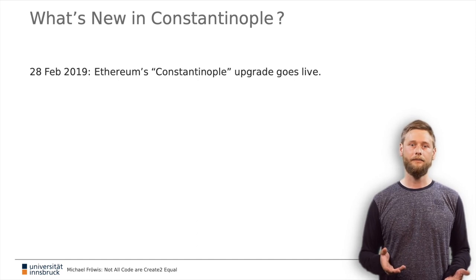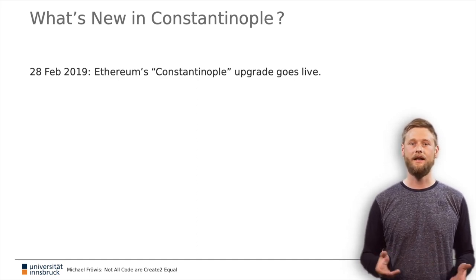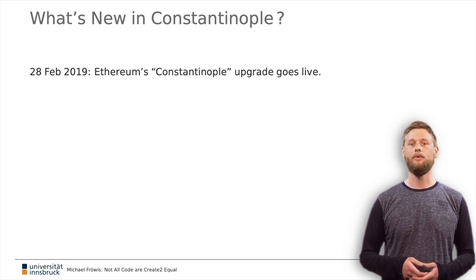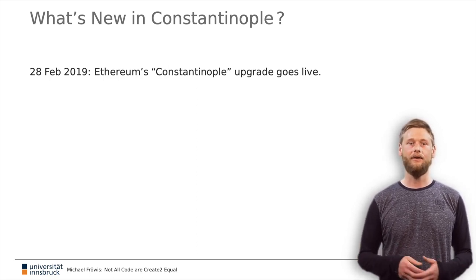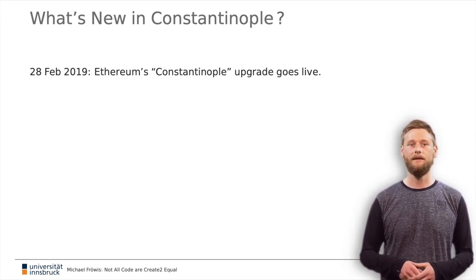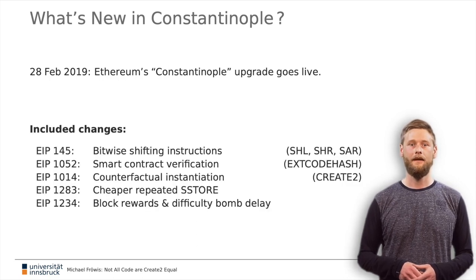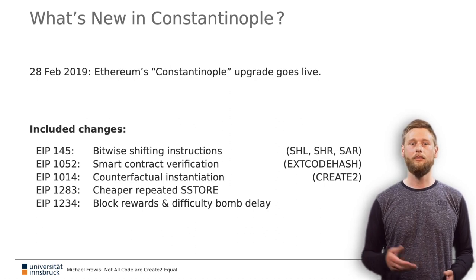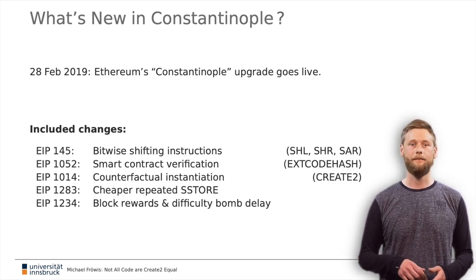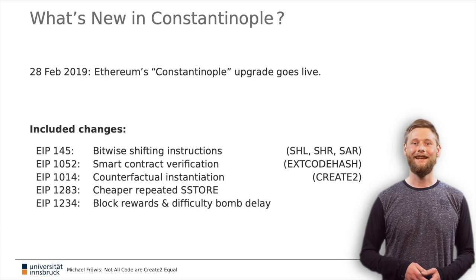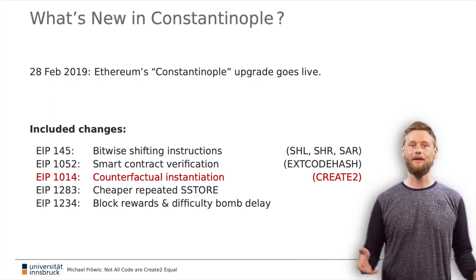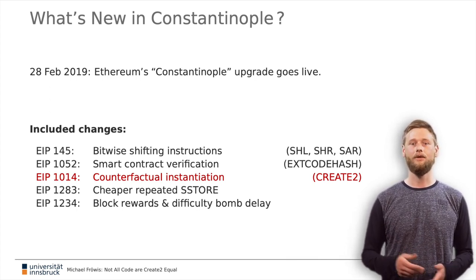In Ethereum, all major upgrades have names. We focus on the Constantinople upgrade that went live on February 28, 2019. This upgrade implemented several Ethereum improvement proposals, short EIPs. Most importantly, it added five new instructions to the Ethereum virtual machine. Our paper looks at one of these, called CREATE2.